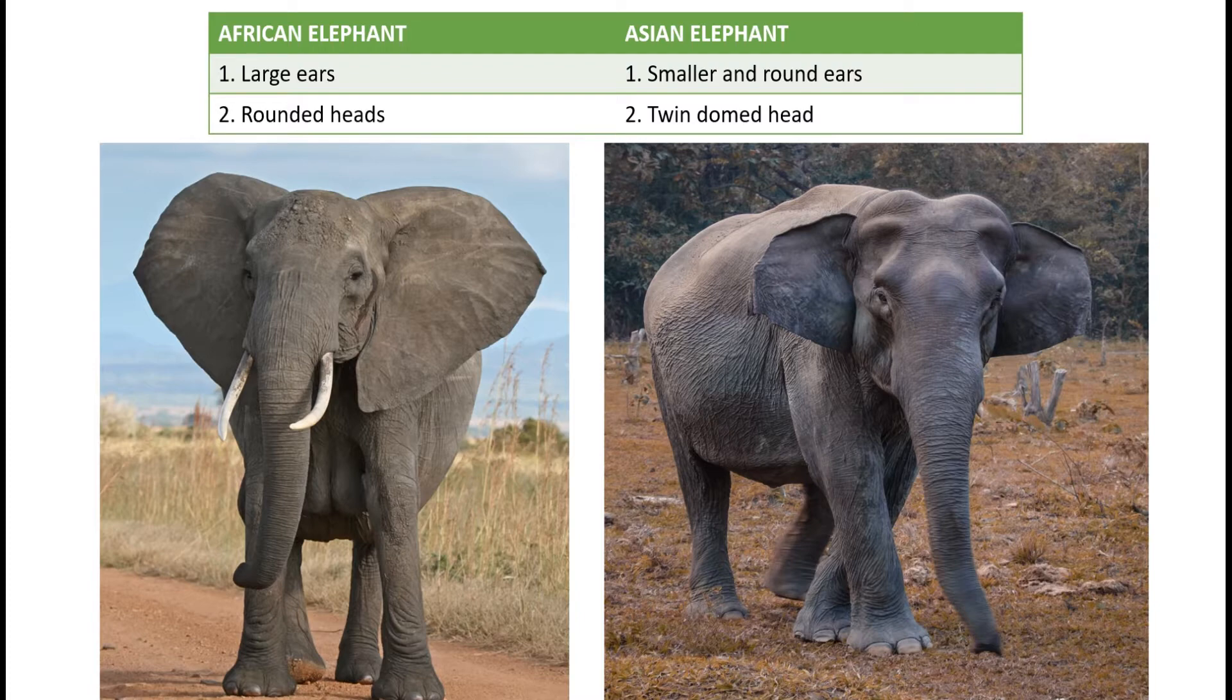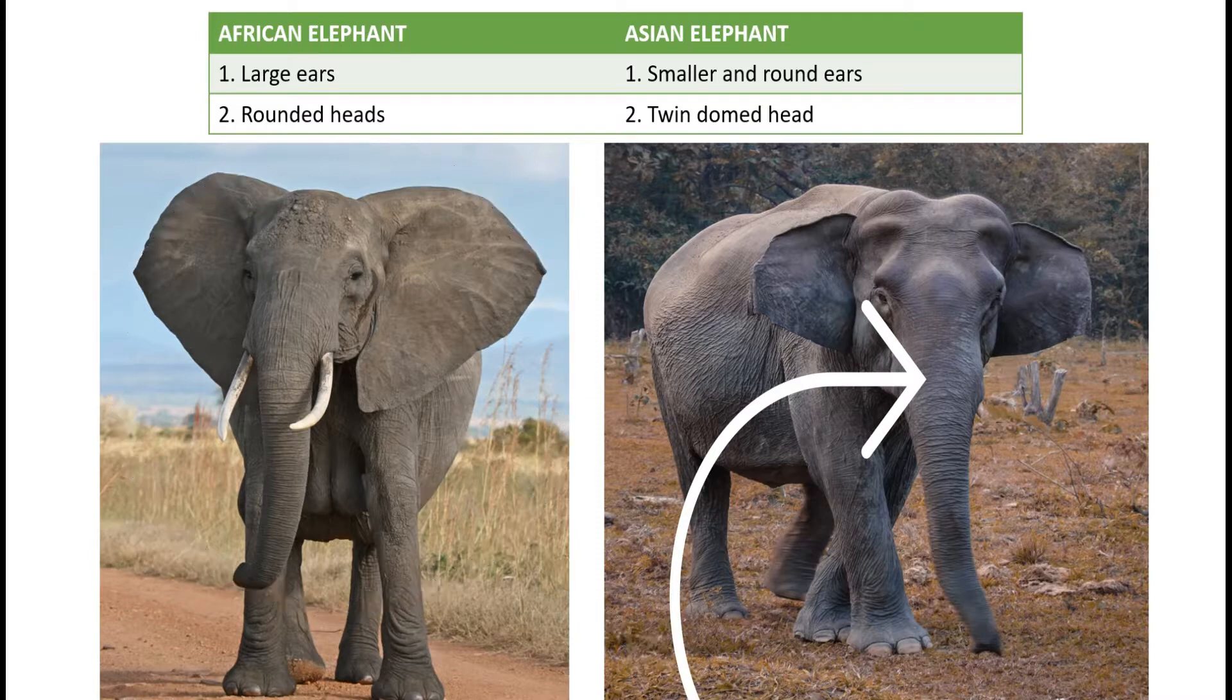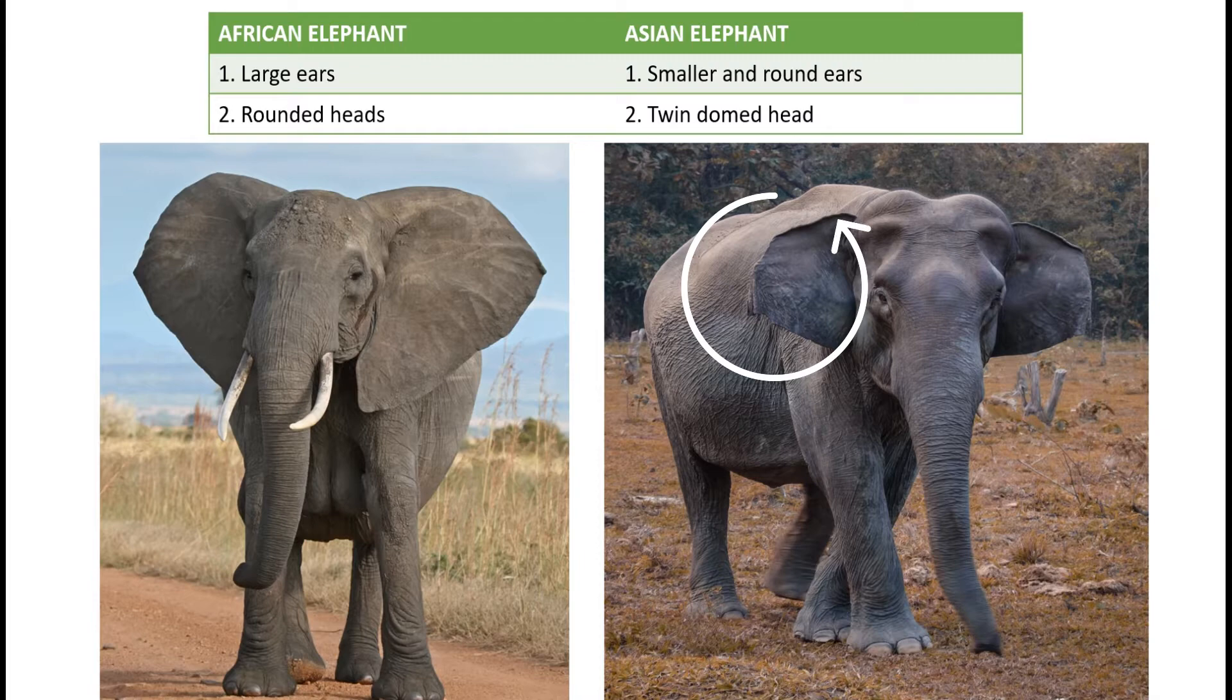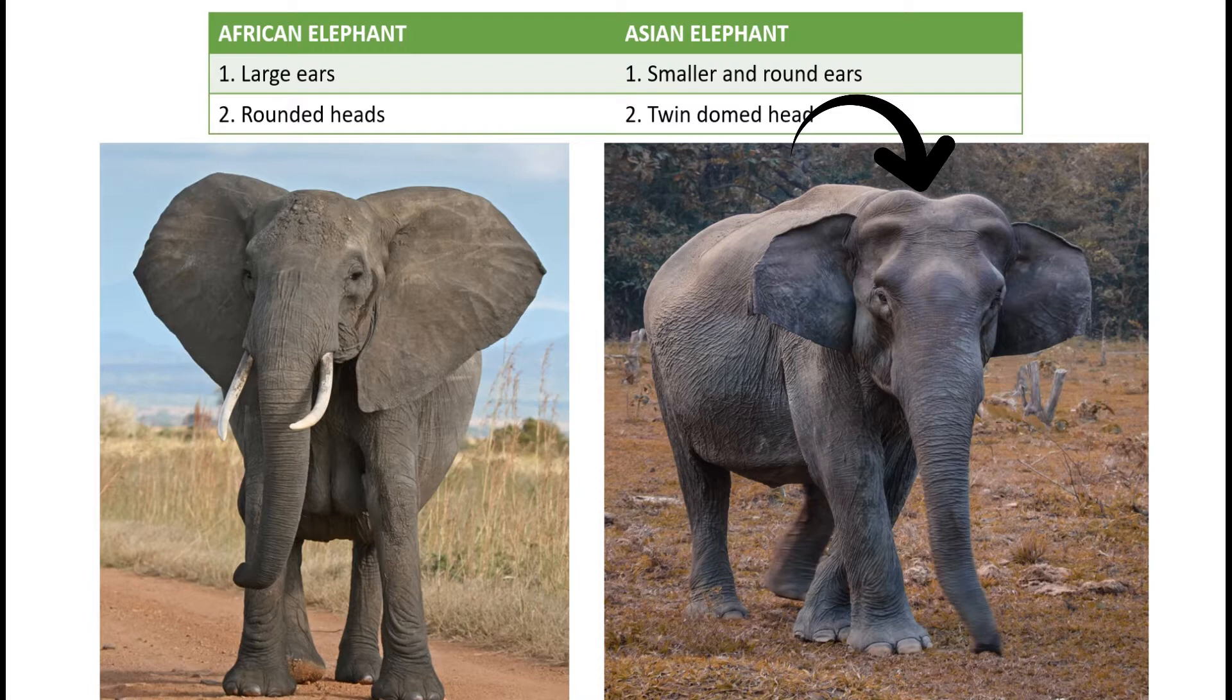Now let me tell you. This is an African elephant and the other pictures are of Asian elephant. African elephants generally have large ears and Asian elephants generally have smaller and round ears. If we talk about the African elephant's head, it's quite rounded in shape, and the Asian elephant is twin dome shape.